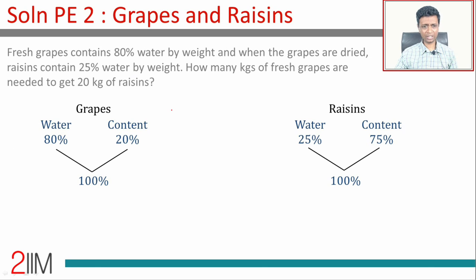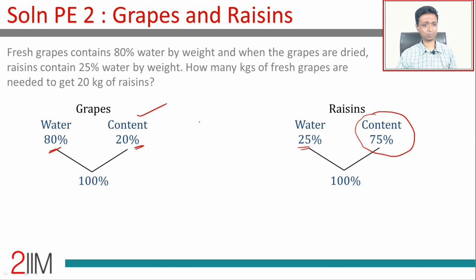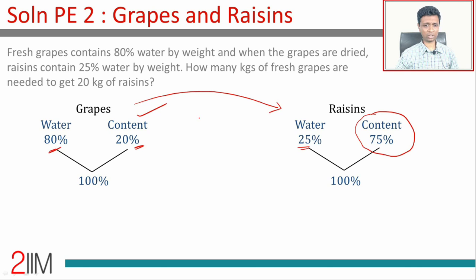Quickly capture the data: fresh grapes contain 80% water, so 20% is content — the part that is not water. Raisins contain only 25% water, so content constitutes 75%. We need to create 20 kilograms of raisins. This is a classic question — we're going from one mixture to another, from grapes to raisins.